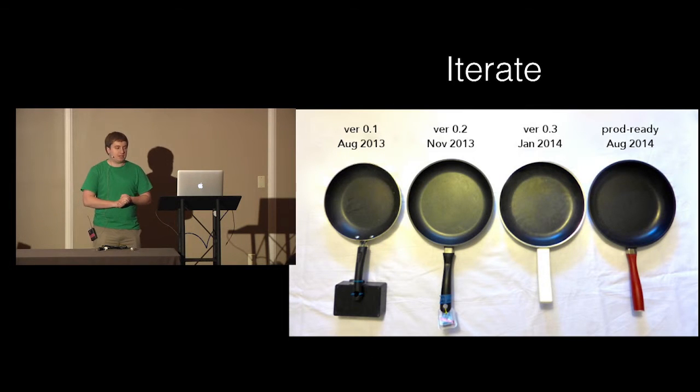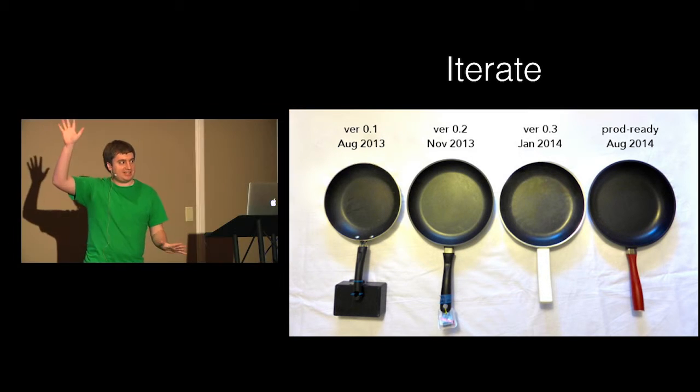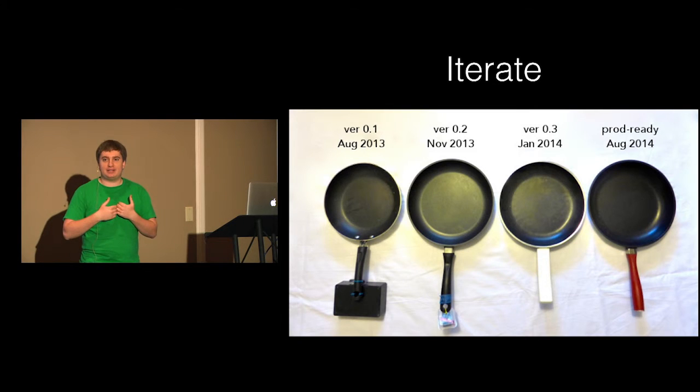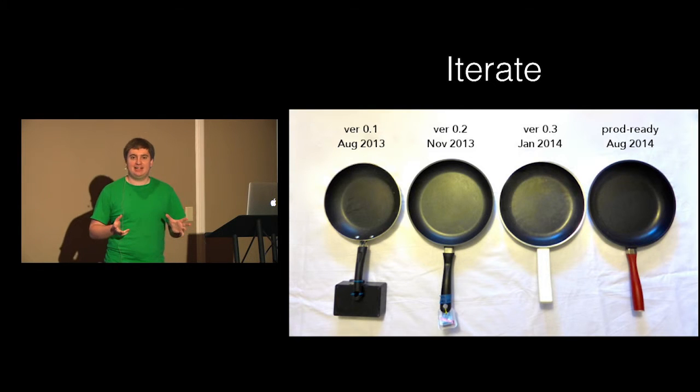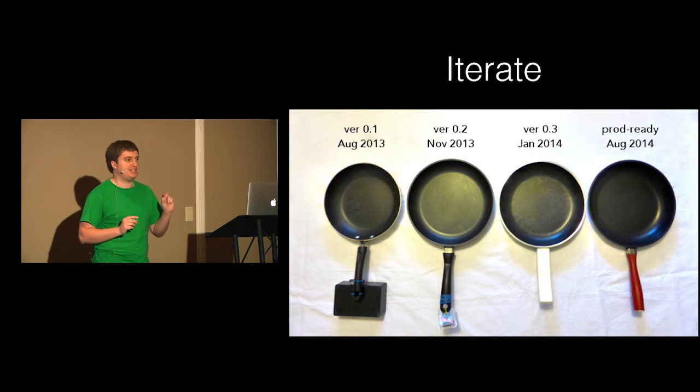This is also a good example of iteration. Has anyone seen this Kickstarter for Pantelligent? So the idea is that if you could precisely use this temperature sensor to control the temperature of the pan, it's actually going to help you cook your food really well, to perfect precision. So the first prototype is this big, giant, black box attached to a frying pan. On the left side, that's like a year ago. No one was going to buy that. And then over time, they've made it smaller.